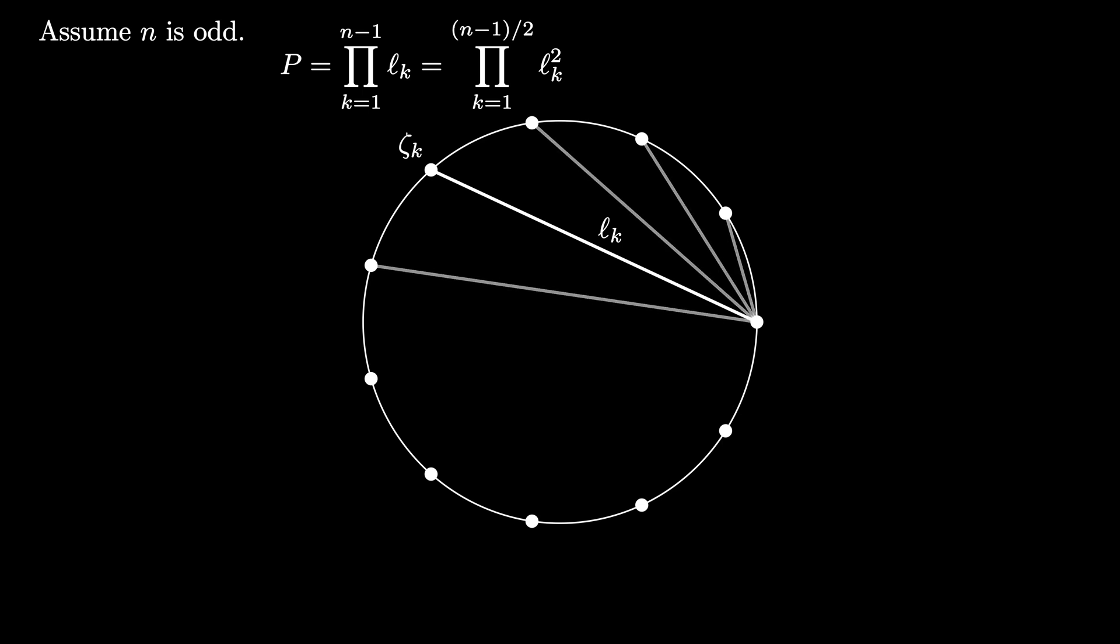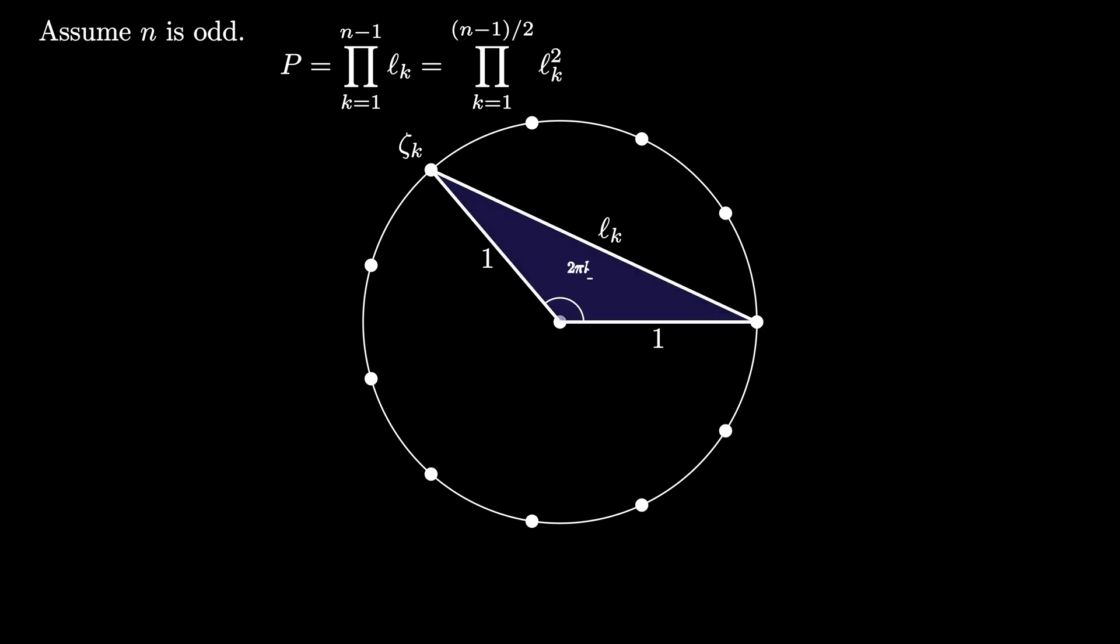Now let's compute l_k using the law of cosines. We know that this chord subtends an angle of 2πk/n, as shown here. Then using the law of cosines...